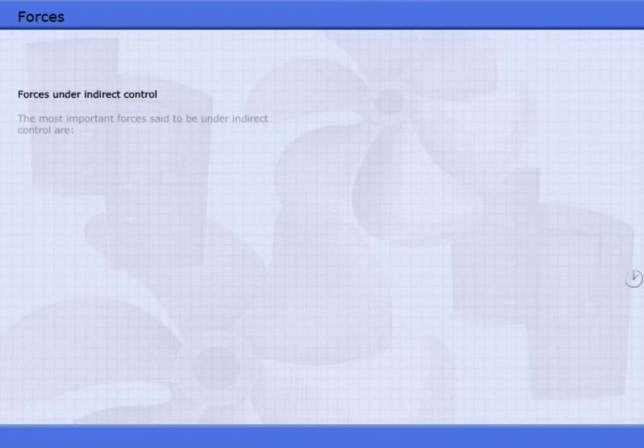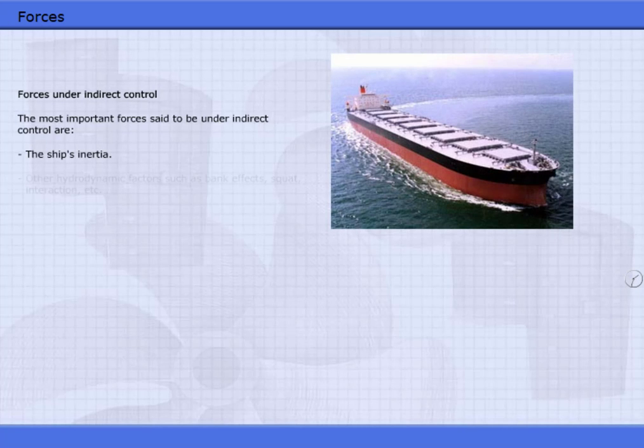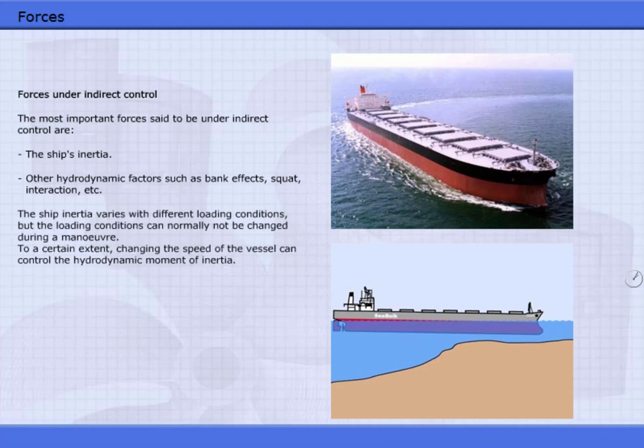The most important forces said to be under indirect control are the ship's inertia, other hydrodynamic factors such as bank effects, squat, interaction, etc. The ship inertia varies with different loading conditions, but the loading conditions can normally not be changed during a maneuver. To a certain extent, changing the speed of the vessel can control the hydrodynamic moment of inertia.